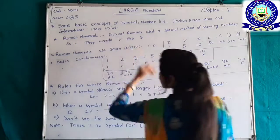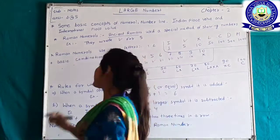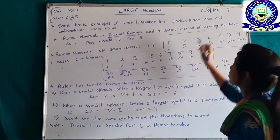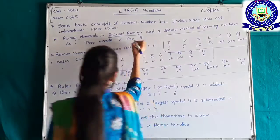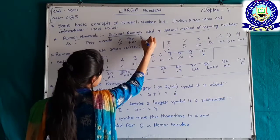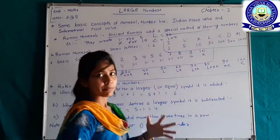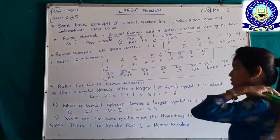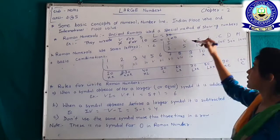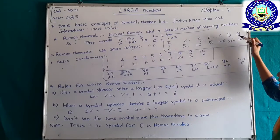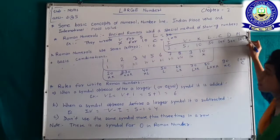Our next topic is Roman numerals. Romans used a special method of showing numbers called Roman numerals. Roman numerals use seven letters: I, V, X, L, C, D, and M. I for 1, V for 5, X for 10, L for 50, C for 100, D for 500, and M for 1,000.